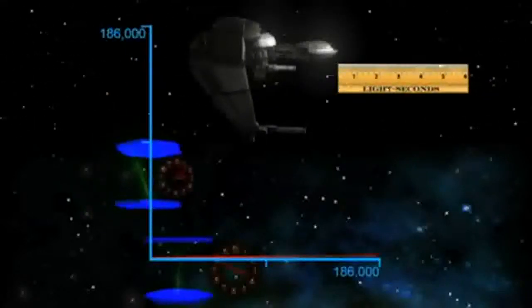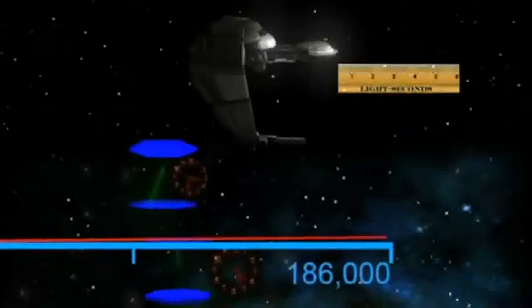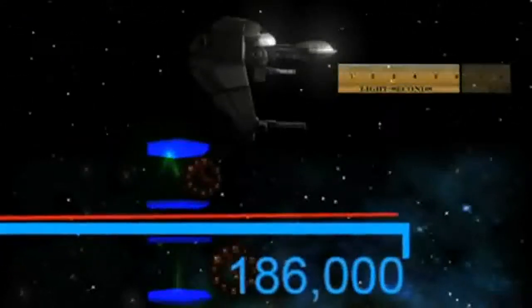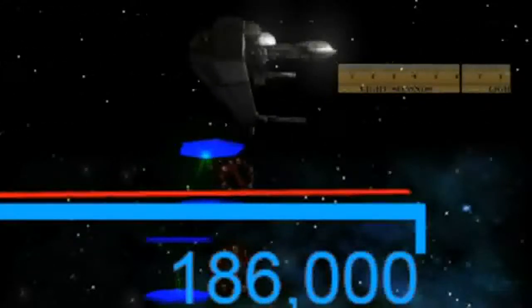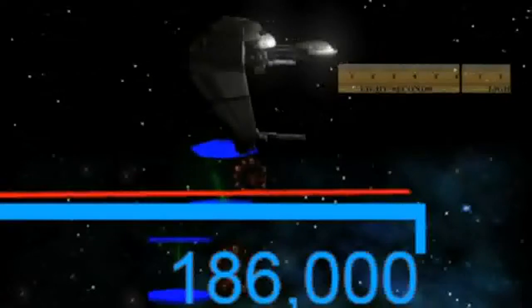The fastest that humans have ever traveled is a few miles per second, a tiny, tiny fraction of the speed of which light travels: 186,000 miles per second.